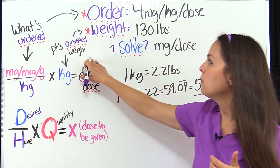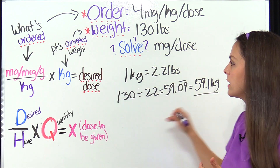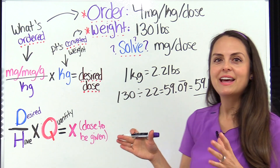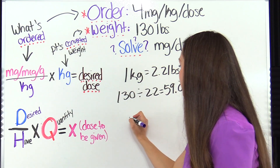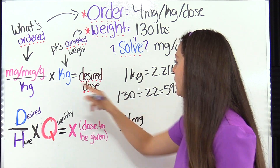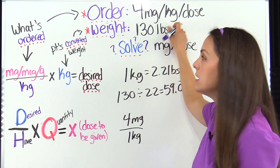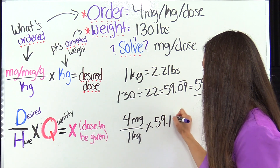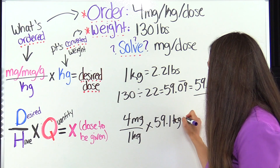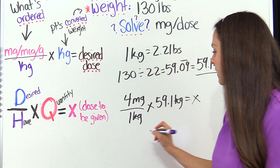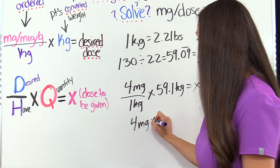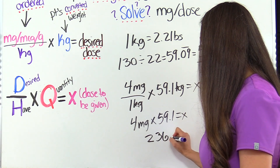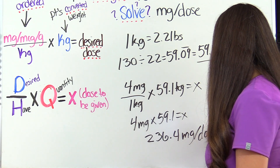Then we multiply that by the patient's converted weight — 59.1 kilograms — which we just solved for, and we get the desired dose. So plugging in: four milligrams over one kilogram, multiplied by 59.1 kilograms. Our kilograms cancel out. Four divided by one is four, times 59.1 gives us 236.4 milligrams. And that is our answer.